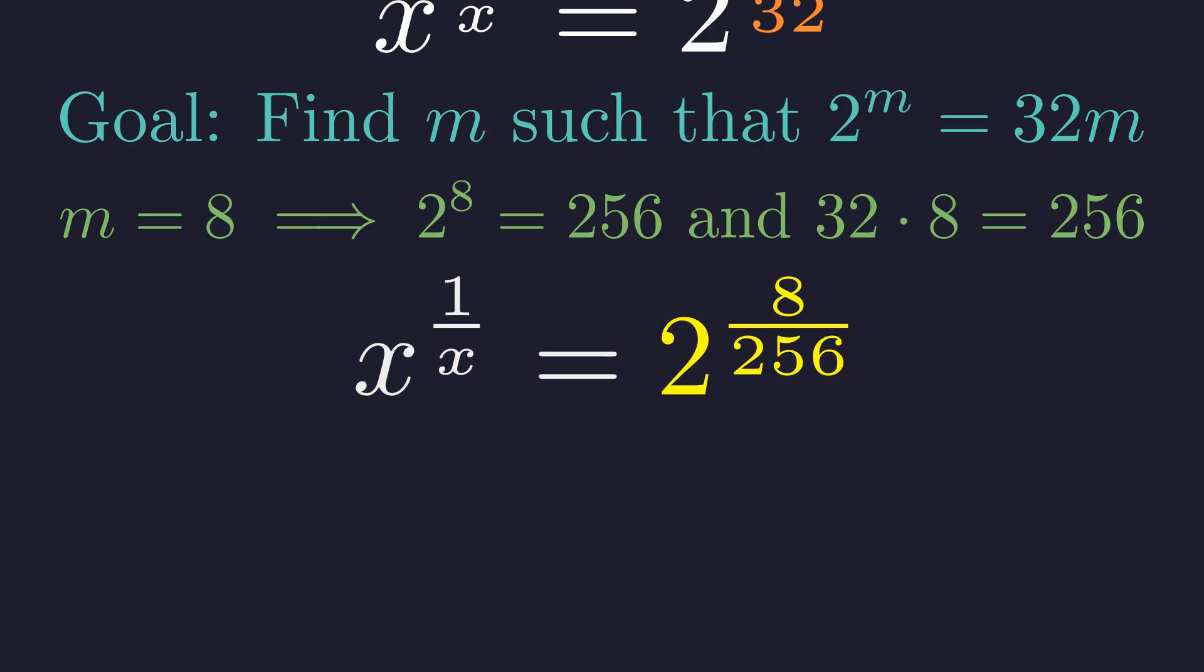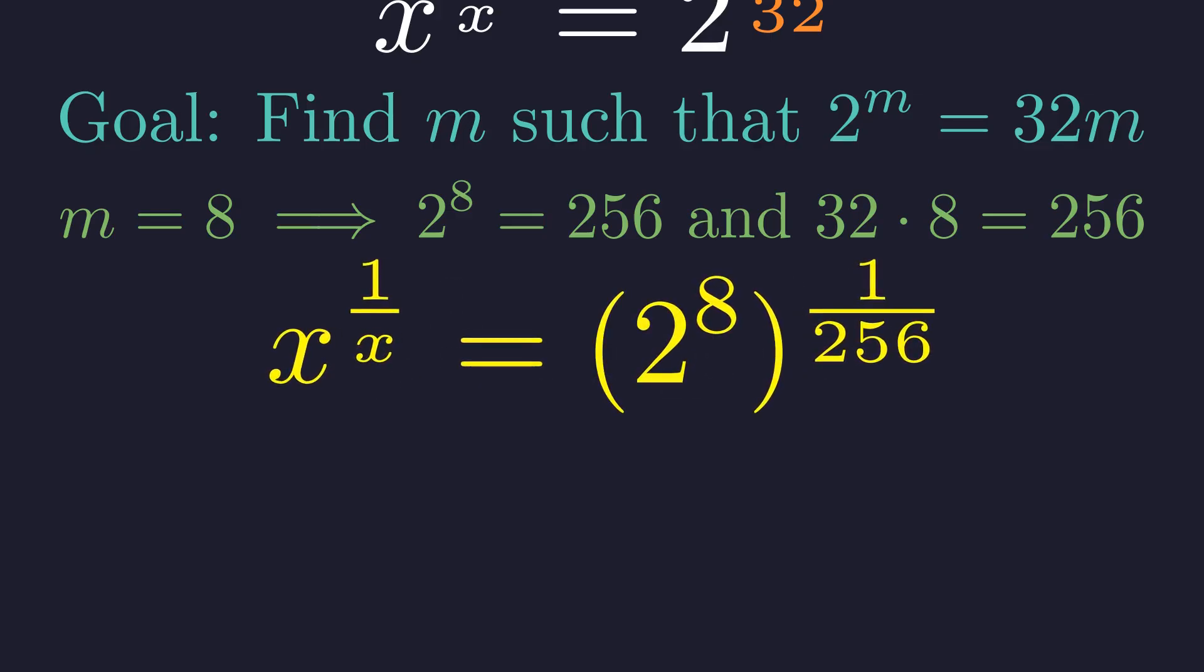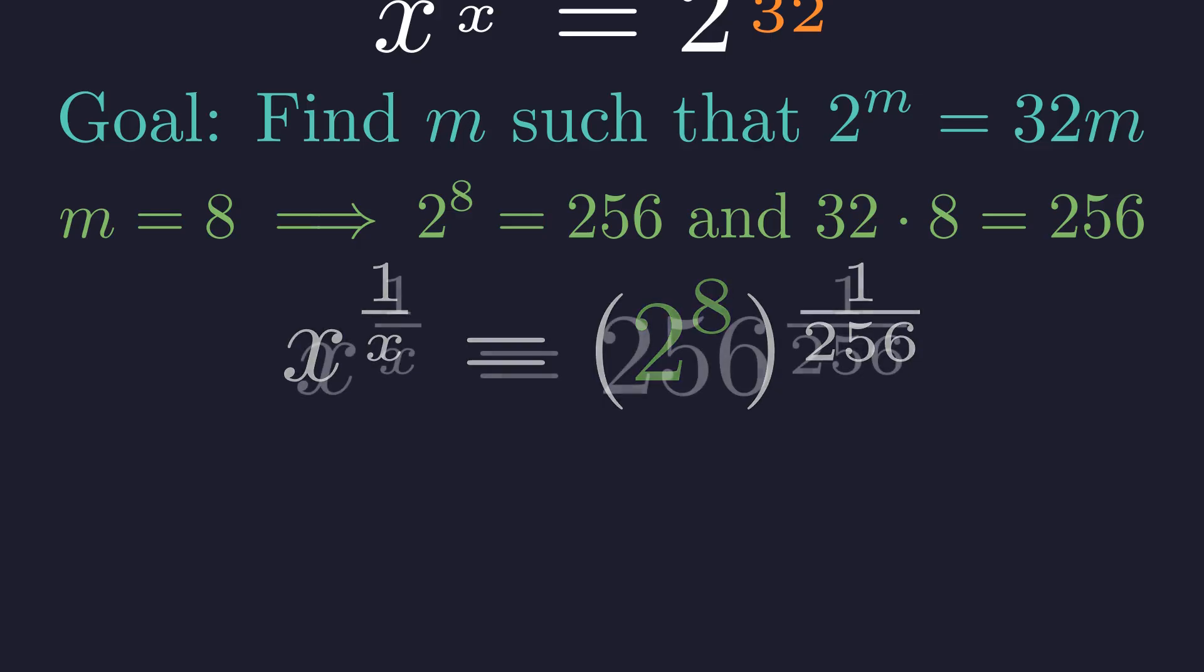Now we can use the power rule in reverse. 8 divided by 256 is the same as 2 to the 8th, all raised to the power of 1 over 256. And this separates out the structure we need. 2 to the 8th is 256. And there's the magic. 256 to the power of 1 over 256.